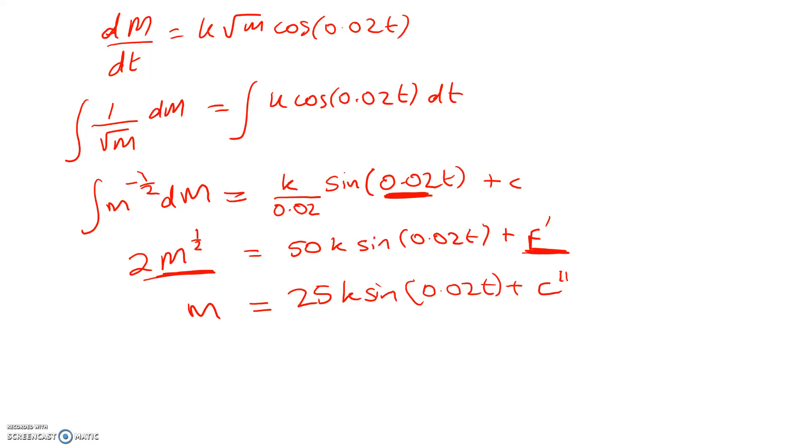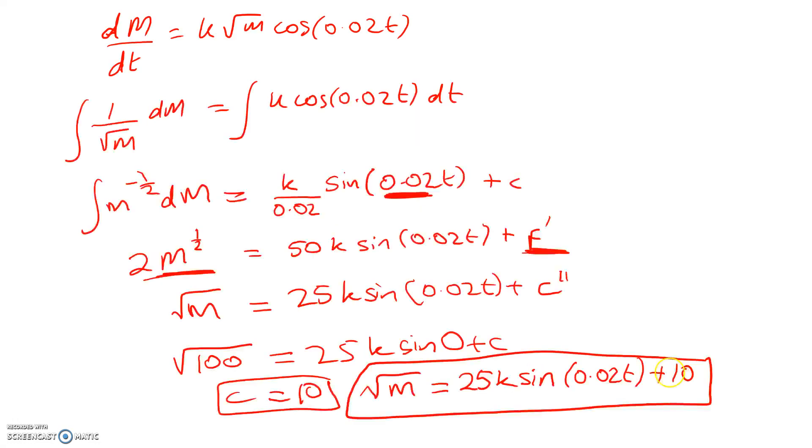Right, now the next step, that's root M there. The next step is to use my initial condition, which is that when t is 0, M is equal to 100. So root 100 equals 25k sin(0) plus c. We'll just call that c. So c is equal to 10. So we've used the initial condition, and we can now write my general solution. I'm going to do that just here. There we are. Root M is equal to 25k sin(0.02t) plus 10.